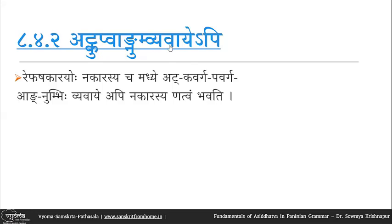Five categories of intervening letters are mentioned: 'at' is the pratyahara ac — all swaras and hayavarat; then ku and pu, representing kavarga and pavarga fully; ang, which is an upasarga; and num, representing anuswara. Even when repha or shakara and nakara are separated by any of these letters, the nakara is converted to nakara. All intervening letters without exception must belong to one of these categories, but they can be any number.